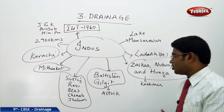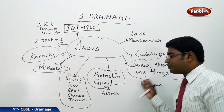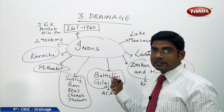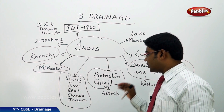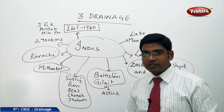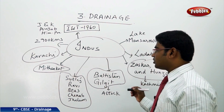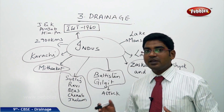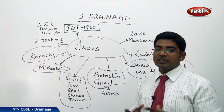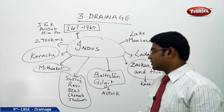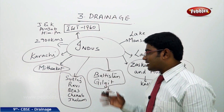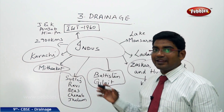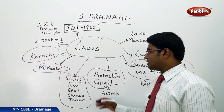After joining in the Kashmir region, it passes through Baltistan and Gilgit ranges and enters into the Atok region. After entering into the Atok region, it gets divided into five major tributaries in the Punjab region: Sutlej, Ravi, Beas, Chenab, and Jhelum.